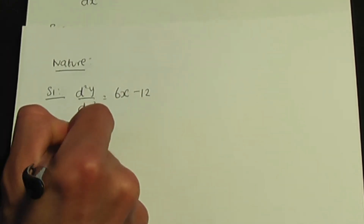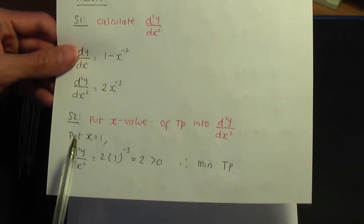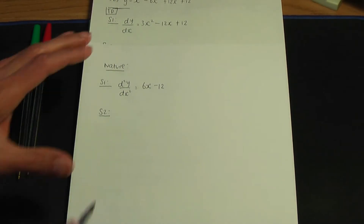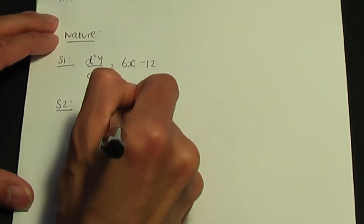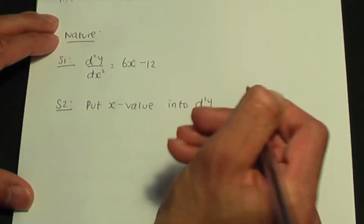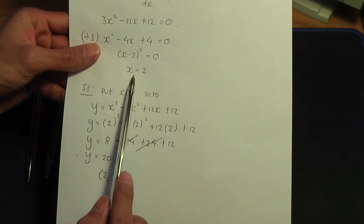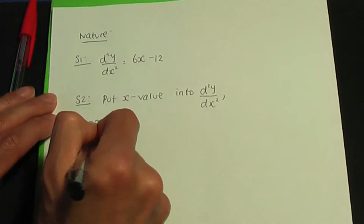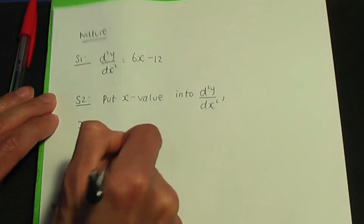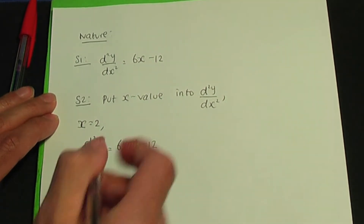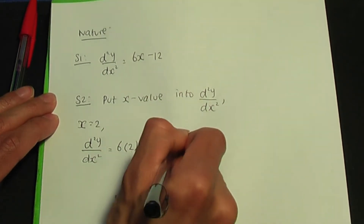This takes us to step number two: put the x value of the turning point into d²y over dx squared. The x value is 2. Putting x equals 2 into d²y over dx squared: 6 times 2 minus 12 equals 12 minus 12, which gives an answer of 0.